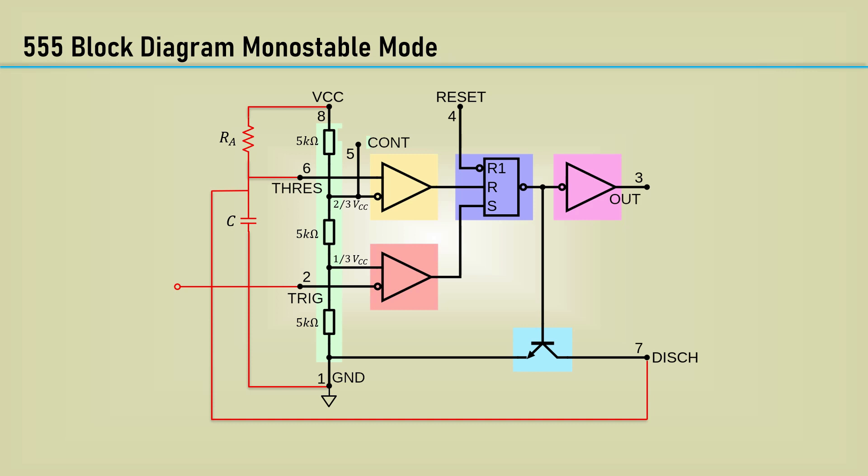The timer is triggered when the trigger input is taken below one-third VCC. That causes the output of this comparator to go high, setting the set-reset flip-flop, and therefore the output goes high. Because the negative output of the flip-flop has gone low, it turns off the discharge transistor that had the timing capacitor shorted. The external capacitor begins to charge exponentially through RA.